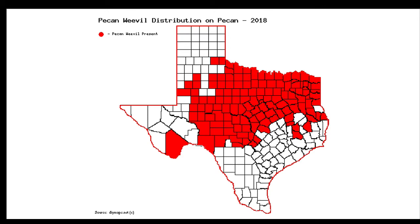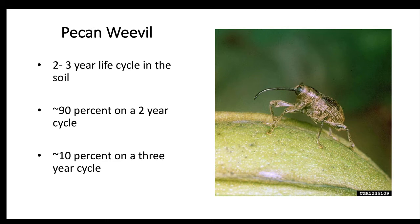The pecan weevil has a unique life cycle with a two to three year cycle in the soil, with about 90% of the population on a two year cycle and approximately 10% on a three year cycle.